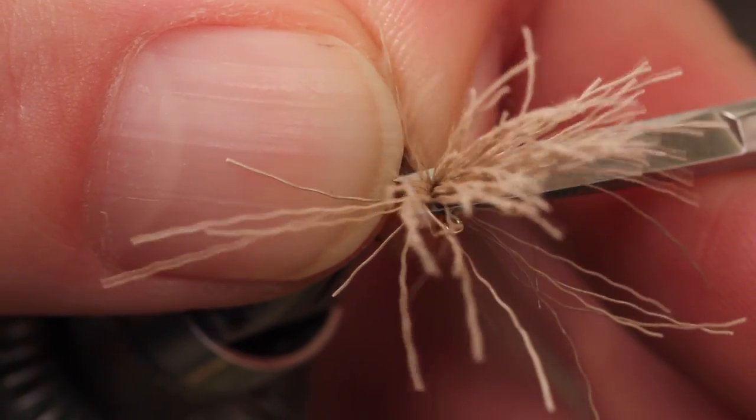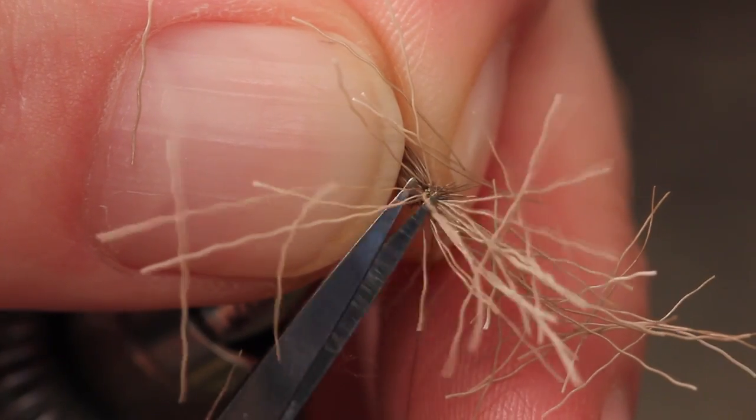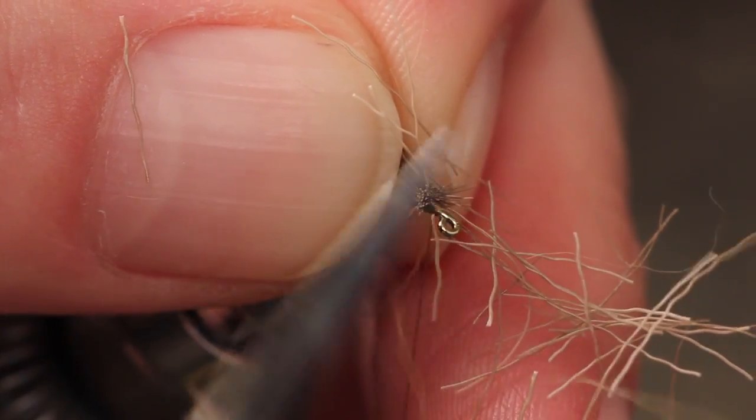While still holding onto the wing, carefully snip the butt fibers off close. It looks a little messy but the technique works.